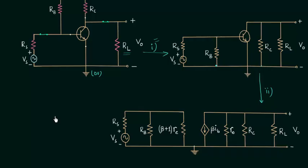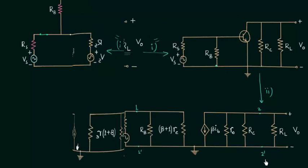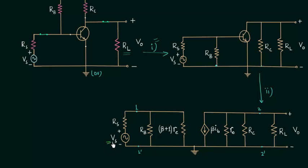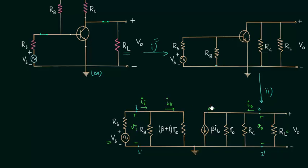Now we will move to the calculation of input and output impedances. Let's say this terminal is terminal one and this terminal is terminal one prime. This terminal here is terminal two prime. In order to calculate different circuit parameters we will neglect the source and we will also neglect the load. Let's say the input current is I subscript I and the input voltage is V subscript I. The input voltage is the potential difference between terminals one and one prime. The output current is I subscript O and the output voltage is the voltage between terminals two and two prime.